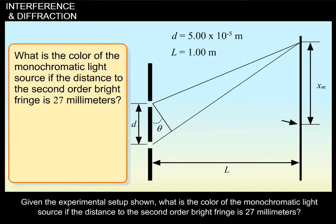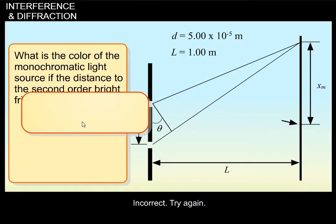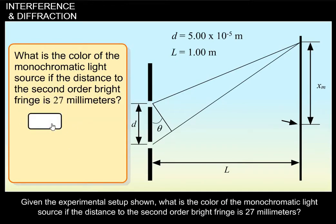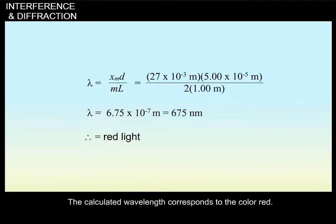Given the experimental setup shown, what is the color of the monochromatic light source if the distance to the second order bright fringe is 27 millimeters? Incorrect. Try again. Correct. The calculated wavelength corresponds to the color red.